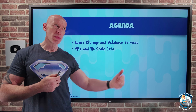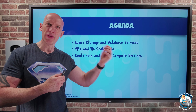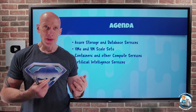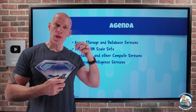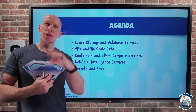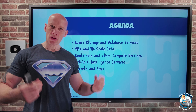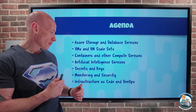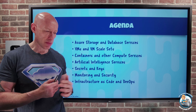Then we get into some of the core compute things where we actually run services: virtual machines, virtual machine scale sets, containers, other types of platform as a service, app services, artificial intelligence — obviously that's a huge deal right now, so we'll look at some specifics around AI. How we handle secrets, keys, cryptographic type operations, monitoring, security, and then infrastructure as code and DevOps type capabilities.